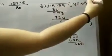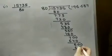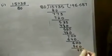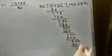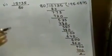80, 7's are 560. Then, 0, 10 minus 6, 4, 400. 80, 5's are 400.